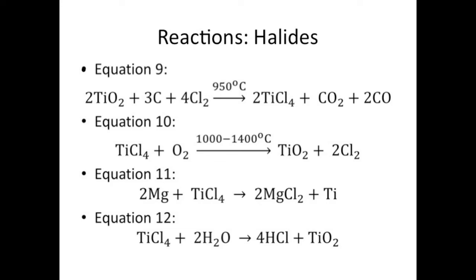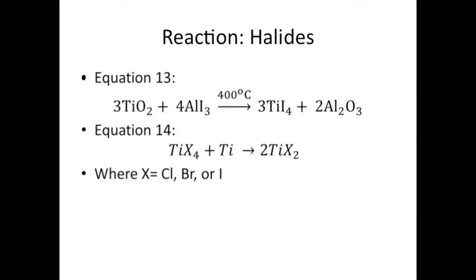Hydrolysis of titanium tetrachloride forms hydrogen chloride and titanium dioxide which could be used in paints. Titanium tetrachloride is oxidized to produce titanium dioxide and chlorine. Titanium tetraiodide is formed by iodination of dioxide with aluminum triiodide when heated at the temperature of 400 degrees Celsius. The general equation in the formation of titanium diiodide is given in equation 14. The titanium tetrachloride is reduced with titanium metal to form this black solid titanium diiodide.